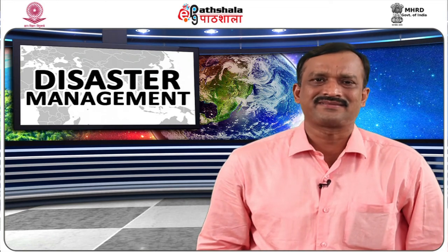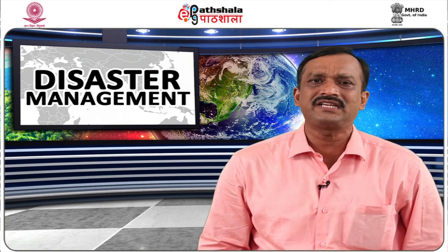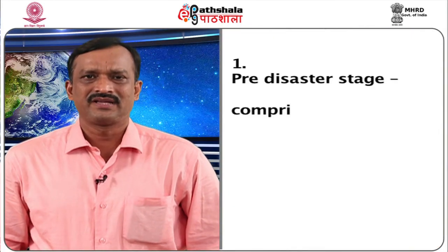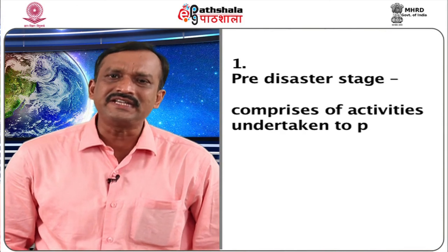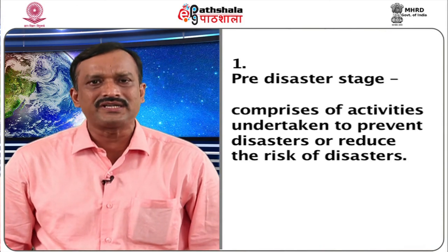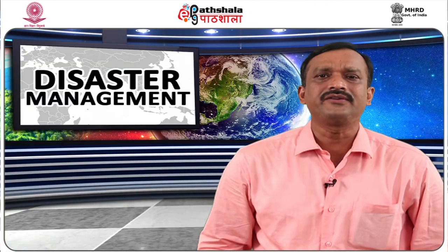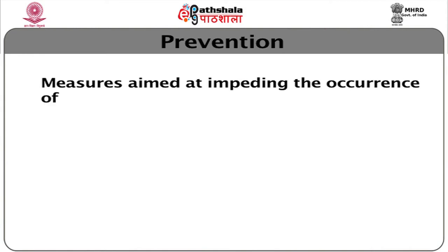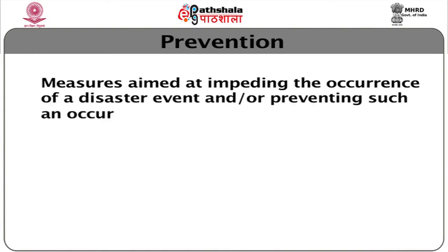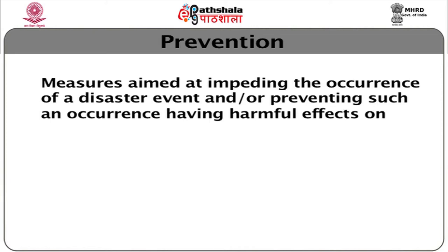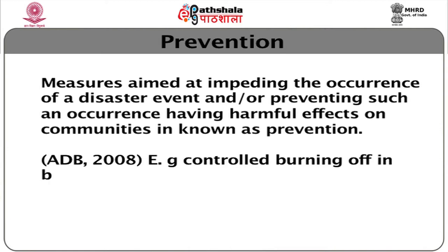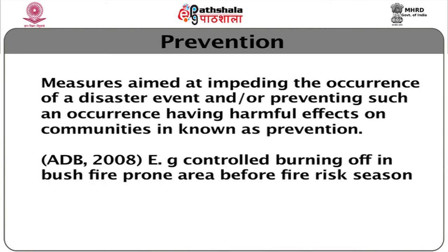Disaster management involves three key stages of activities. The first is the pre-disaster stage, which comprises activities undertaken to prevent disasters or reduce the risk of disasters. It involves prevention — measures aimed at impeding the occurrence of a disaster event and/or preventing such an occurrence from having harmful effects on communities. Example: controlled burning off in bush fire prone areas before fire season.